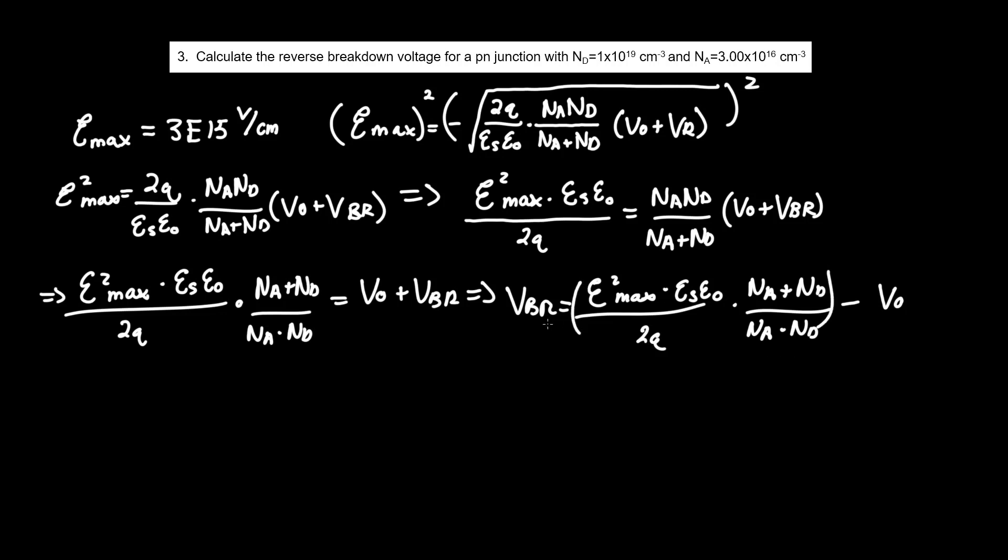This will be the general form of how we can evaluate this problem. We must keep in mind that V0, as I said, was a built-in potential barrier, which is equivalent to thermal voltage times LN of NA ND over NI, or the intrinsic concentration of silicon squared.